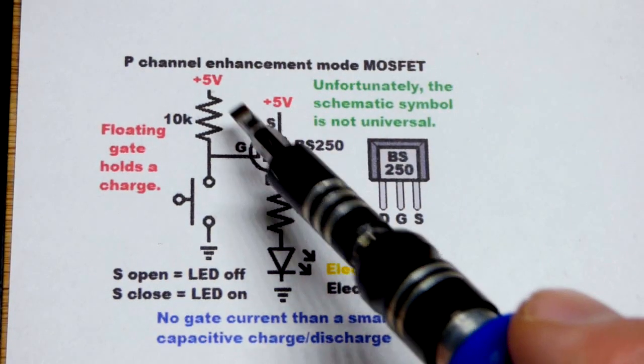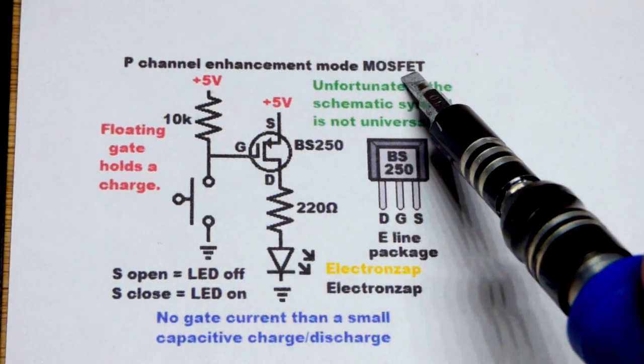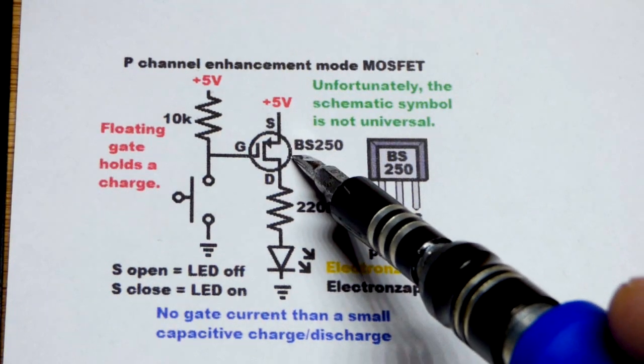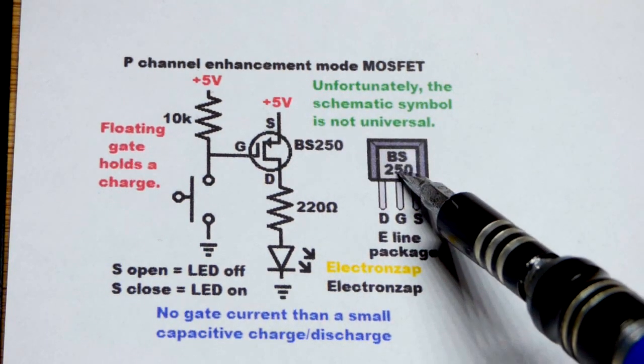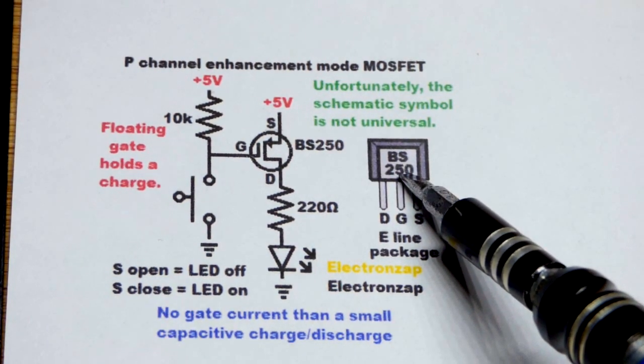So now in this video we're going to look at the P-channel enhancement mode MOSFET. The particular one I have is the BS250 right there, wired as a switch.